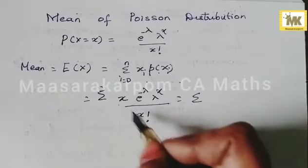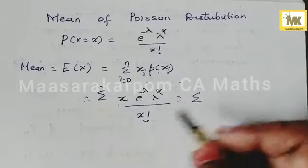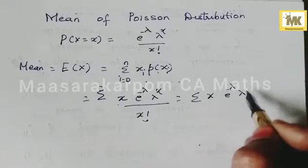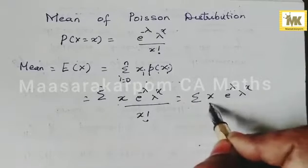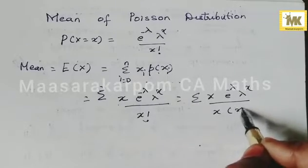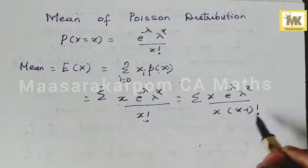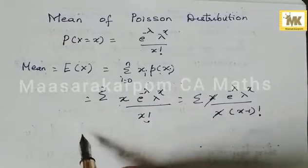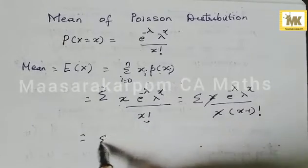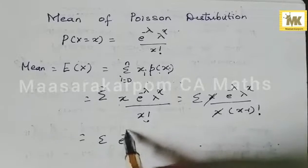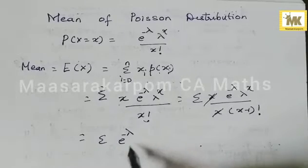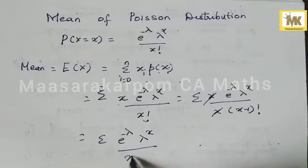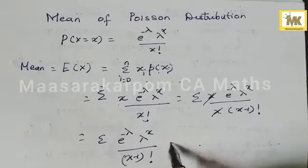Here, since x is present, I am splitting x factorial as x · (x-1)!. So we get x · e^{-λ} · λ^x divided by x · (x-1)!. The x cancels, giving sigma e^{-λ} · λ^x / (x-1)!.